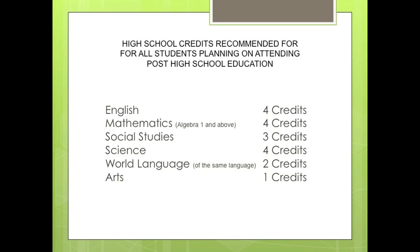To best prepare you for a post-high school program, it is recommended that you take the following number of credits over a four-year high school career: four credits of English, four credits of mathematics, three credits of social studies, four credits of science — keep in mind that more colleges would like to see a student take physics — two credits of world languages of the same language, and one credit of arts.